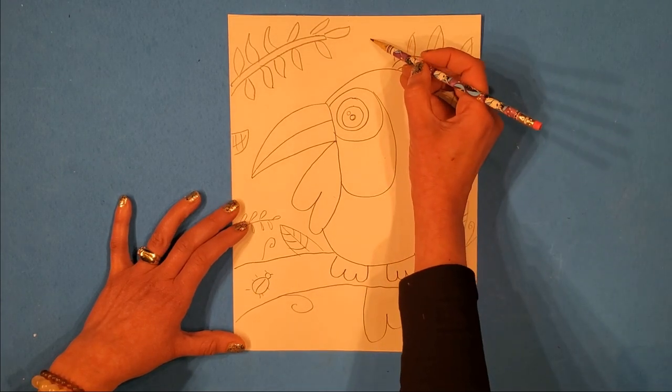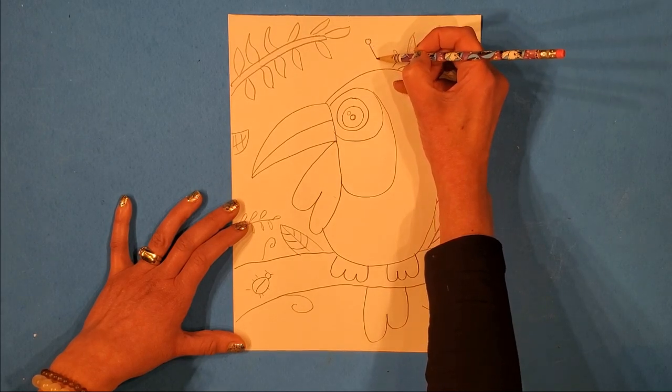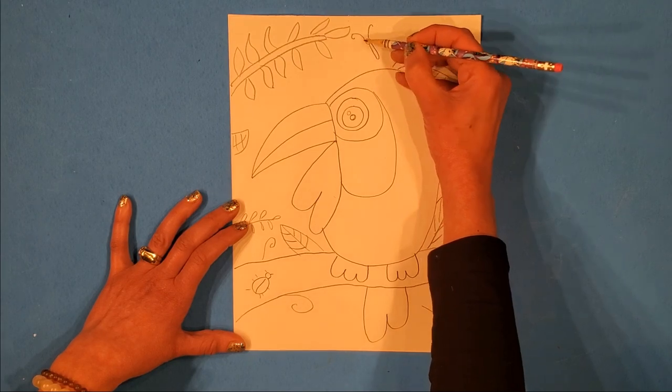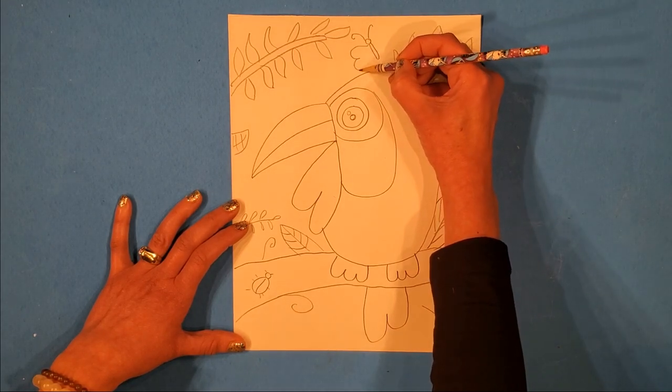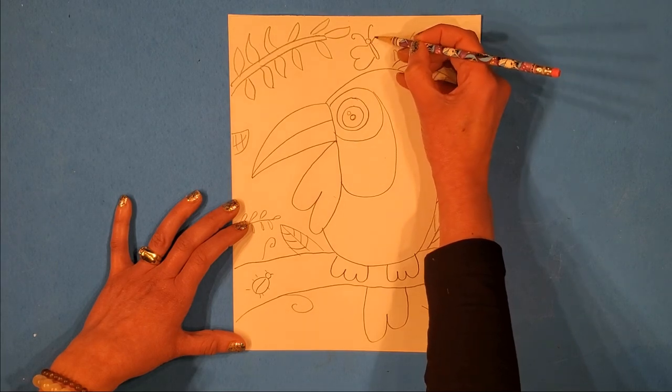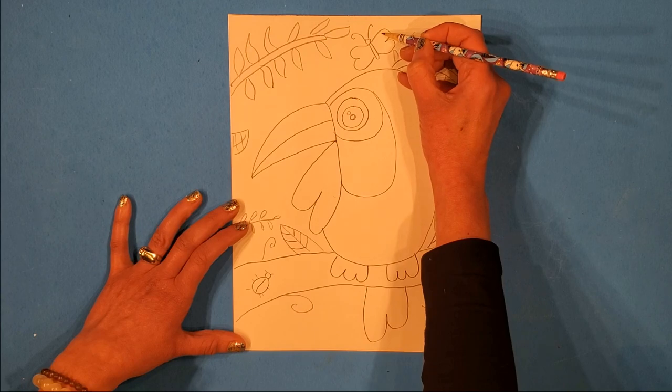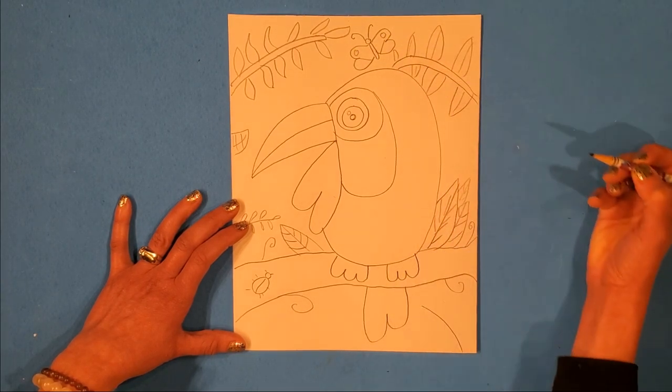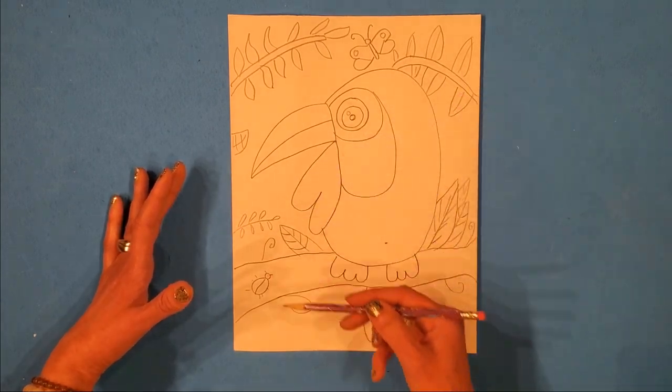I'm going to put a butterfly up here. So I could just start by making a head and stretch out a little body. Add some antennas. And then I can just have fun. Maybe I want to think about that U shape again. Looks like that heart almost. To make some wings. Okay. So now I've got my drawing. I filled in the space.